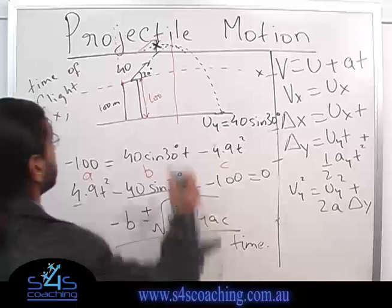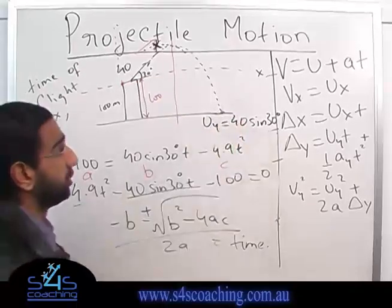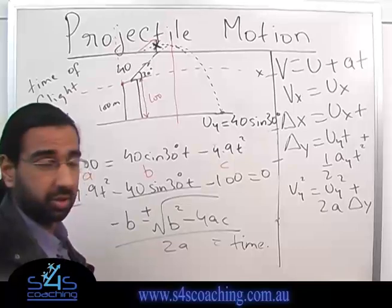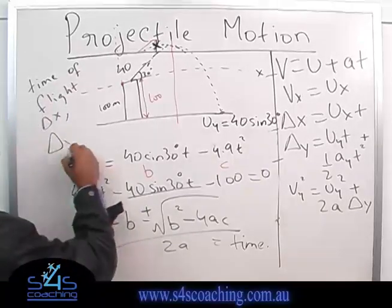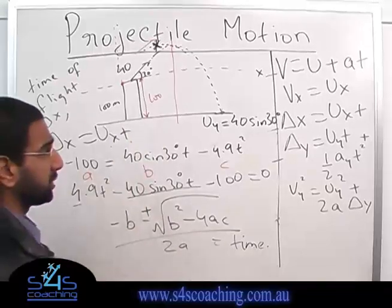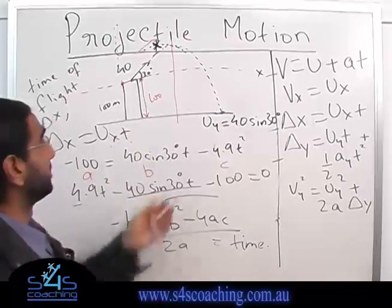The time it will give you will be actually from there to there, which will be the total time. So you don't need to double, you don't need to do anything else. And then once you have the time, you can just do delta x equals ux t. You have the time, you have ux, which is 40 cos 30, and you can solve this question.